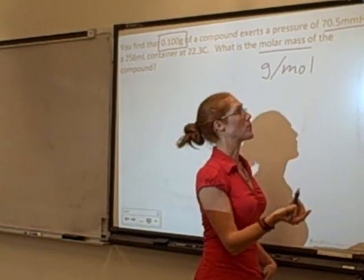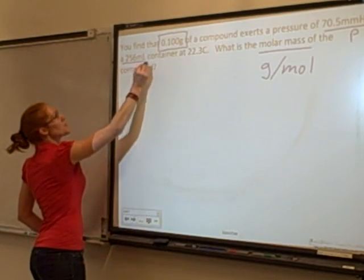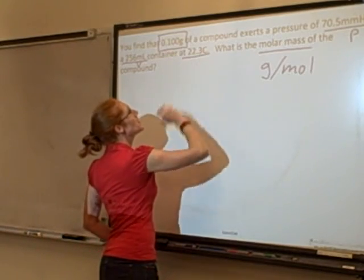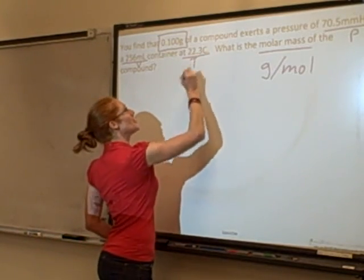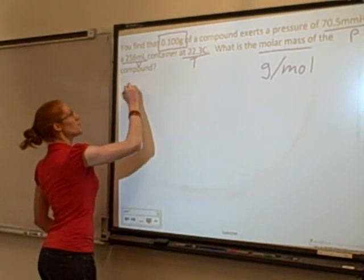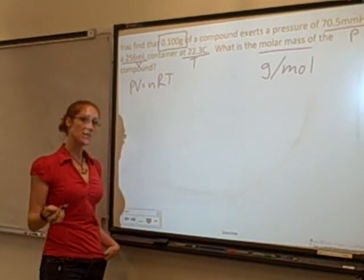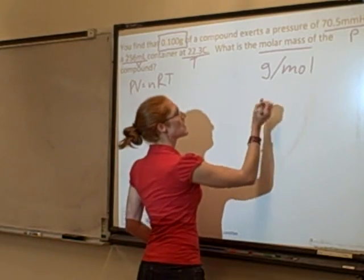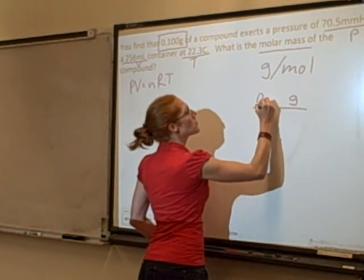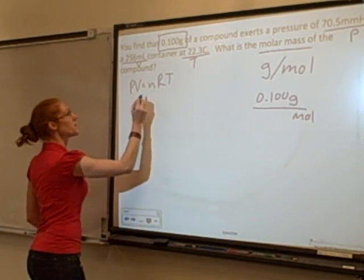Millimeters of mercury is what a barometer uses, so that is a pressure. I've got 256 milliliters, that is a volume. I have 22.3 degrees Celsius, that is a temperature. Alright, so I don't have moles here, but I do have PV and T, so I can use PV equals NRT. Alright, I'm going to rearrange because I'm solving for the moles, and that way I can just plug this into here. I know that I'm going to want to take the grams that I have, 0.100, and divide by however many moles of gas this is. Okay, so I'm solving for moles.